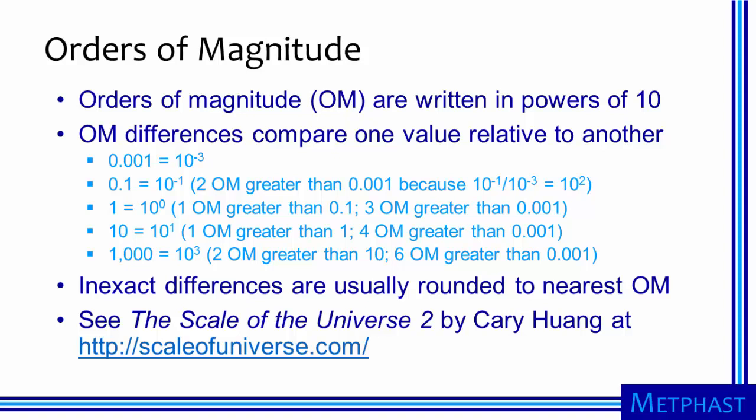An object that is 10 times bigger than another object is 10 to the first power, or one order of magnitude, larger. Likewise, an object that is 100 times bigger is 10 to the second power, or two orders of magnitude, larger.